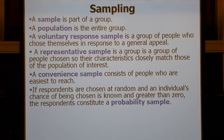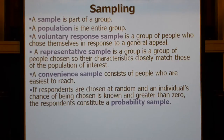So there is some probability that each individual will be chosen. If those conditions hold — people are chosen at random, and an individual's chance of being chosen is known and greater than zero — then we've got a probability sample.